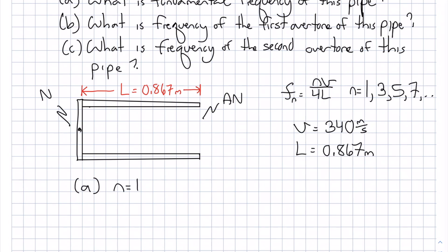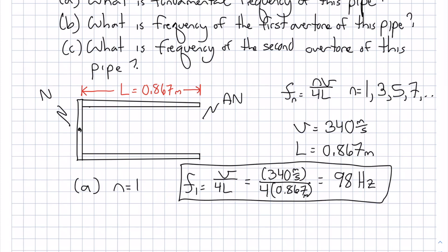Part a is n equals 1. So f1 will be v over 4L, or 340 meters per second divided by 4 times 0.867 meters. If I do that, that's going to be 98 hertz. I round it off. f1 is 98 hertz. That's it. Simple calculation.